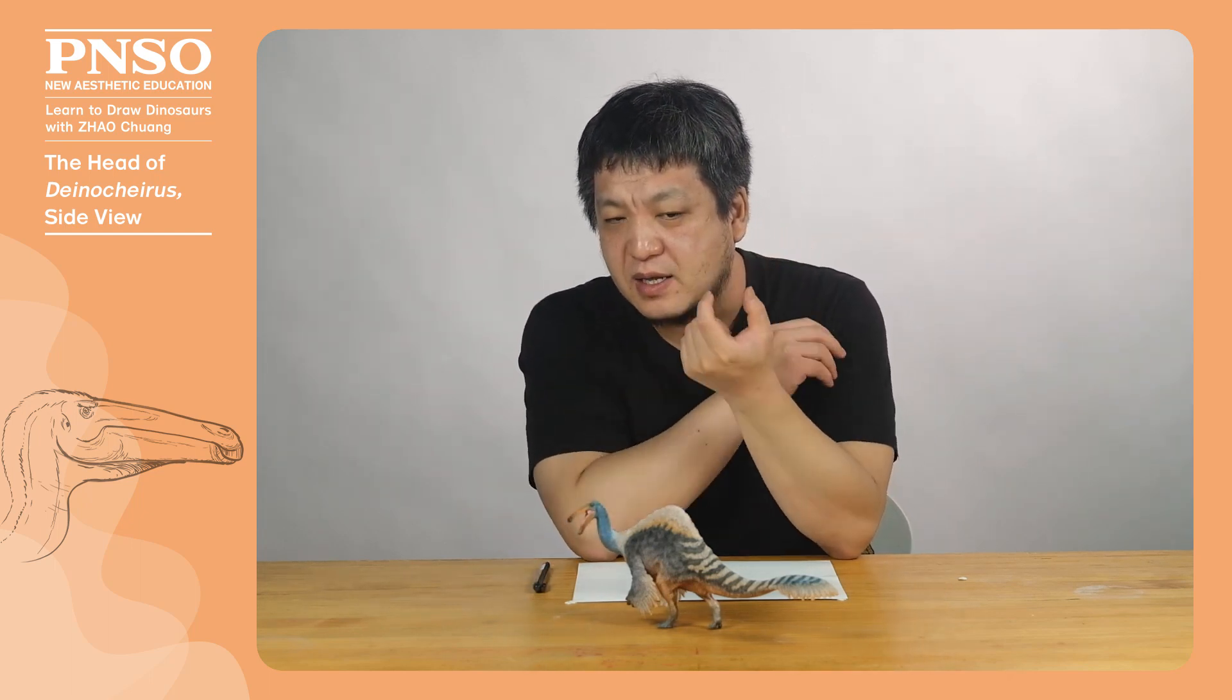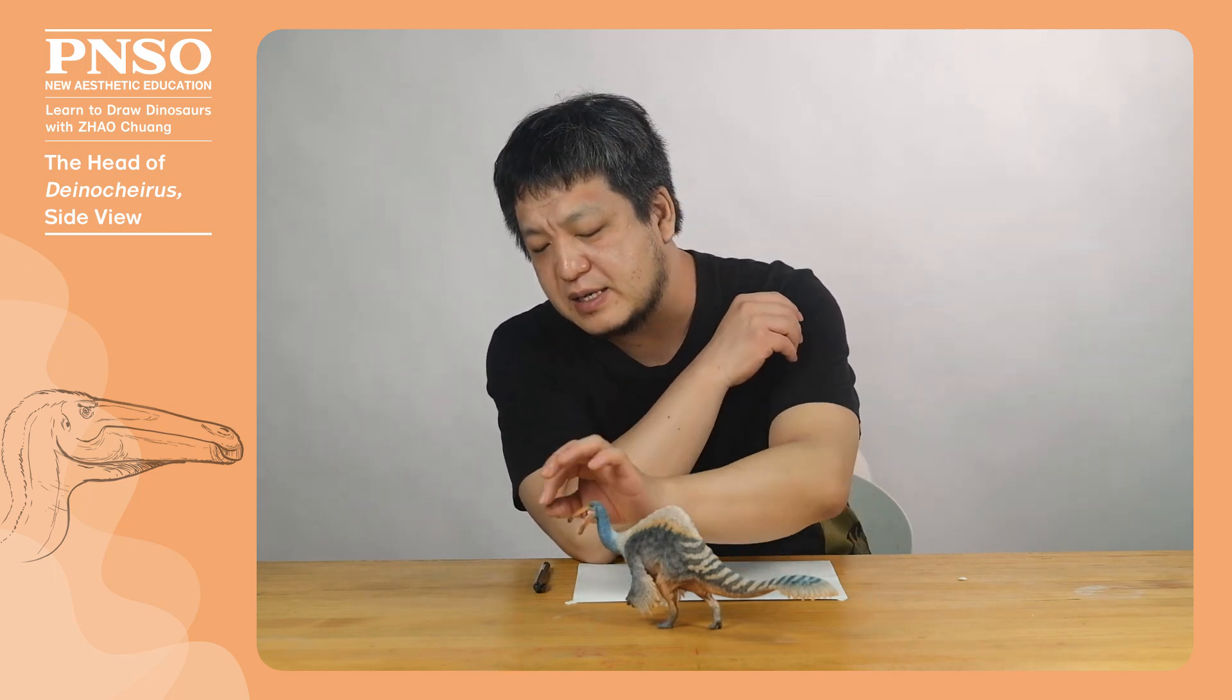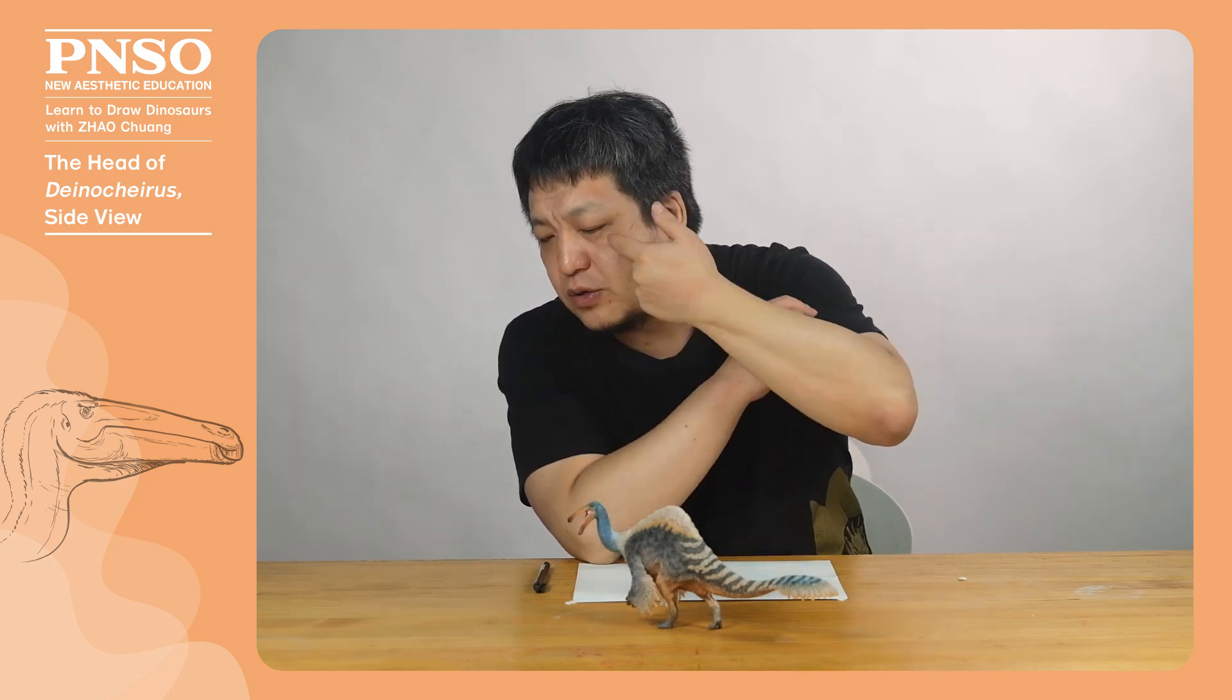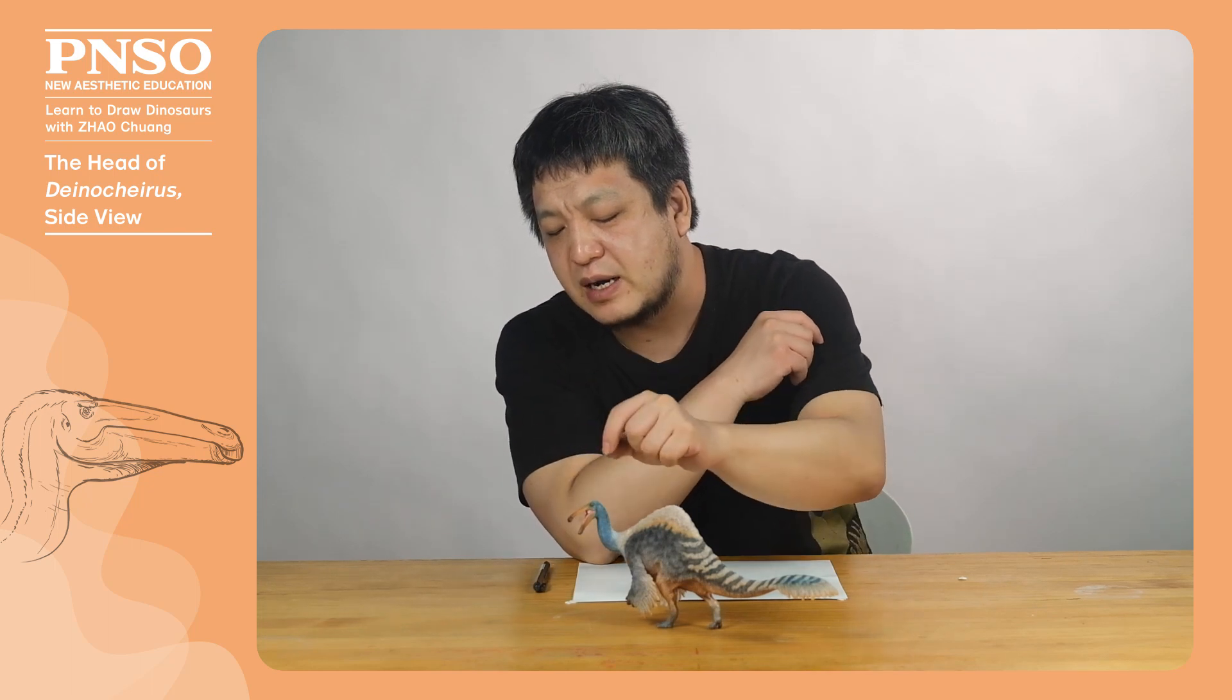The eyeball size of an animal with a sclerotic ring generally depends on the inner diameter of the sclerotic ring. So although this animal was very large, nearly 10 meters long, the diameter of its eyes might only be about 4 centimeters.